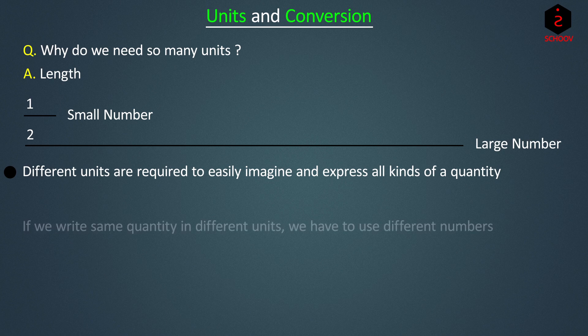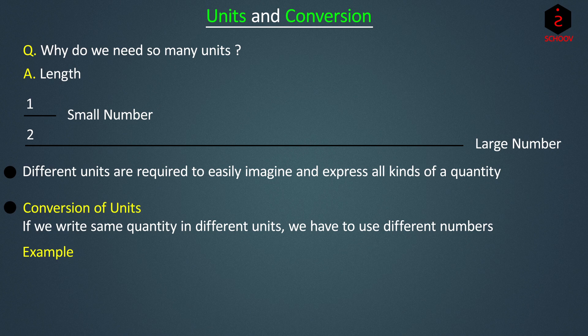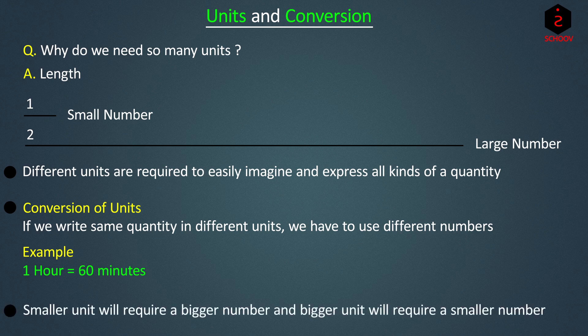Now, if we write the same quantity in different units, we have to use different numbers. This is called conversion of units. For example, one hour is equal to 60 minutes. The time is the same but written in different units — hour and minute. The number used with hour is 1 and the number used with minute is 60. Smaller units will require a bigger number and bigger units will require a smaller number. So, hour is a bigger unit than minute.